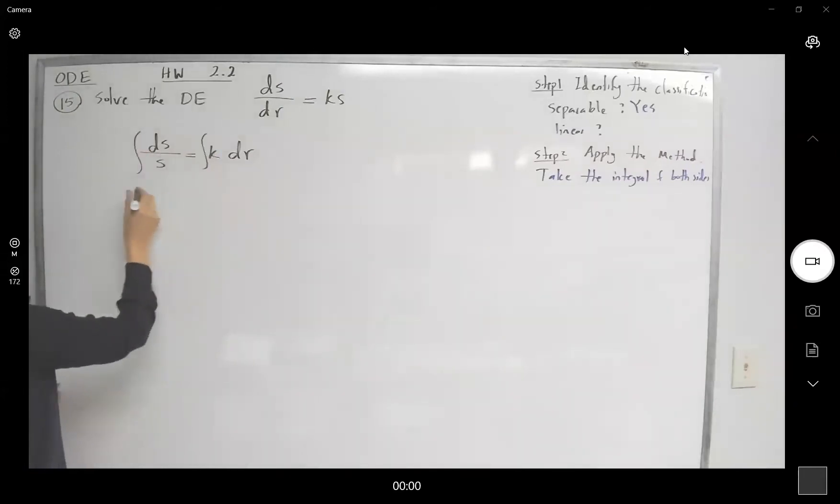By taking the integral of both sides, you get ln of absolute value of s equals to kr plus a constant like c or c sub 1.